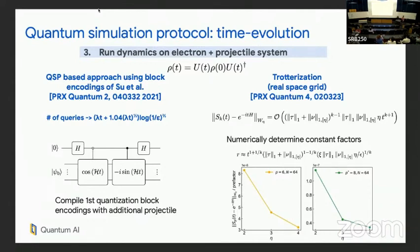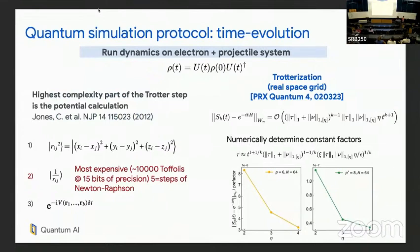An important optimization we worked on that reduces cost quite a lot: to implement the Coulomb interaction on a grid, you need to coherently compute one over the square root of r, the distance. Before this work, the best methods used about 10,000 Toffolies employing a Newton-Raphson type protocol — reducing the computation to additions and multiplications coherently over many iterations. We improved this through a combination of function approximation, QROM, and a single step of Newton-Raphson.